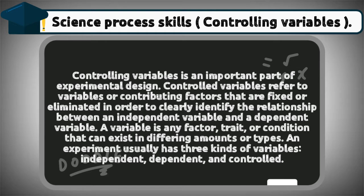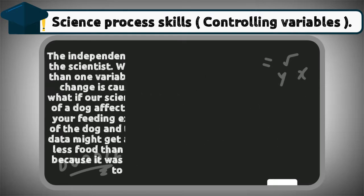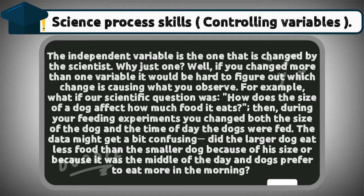A variable is any factor, trait, or condition that can exist in differing amounts or types. An experiment usually has three kinds of variables: independent, dependent, and controlled. The independent variable is the one that is changed by the scientist. Why just one? Well, if you changed more than one variable, it would be hard to figure out which change is causing what you observe.